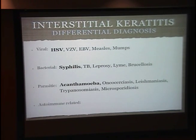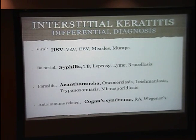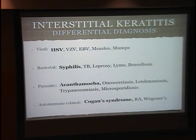Parasitically, mostly in the United States we're looking at acanthamoeba infections leading to interstitial keratitis, and then other parasites in other regions of the world. When we think of autoimmune-related, we often think of Cogan syndrome — a hypersensitivity reaction to what is thought to be a shared antigen within the corneal stroma and the inner ear. These patients often present with vestibular symptoms, ocular symptoms, and classically vasculitis as well.